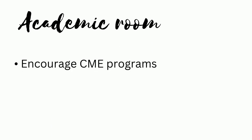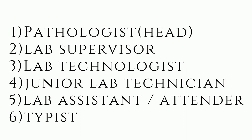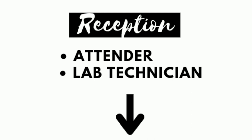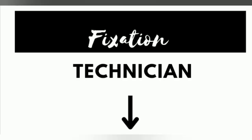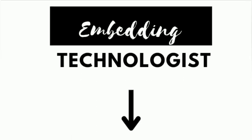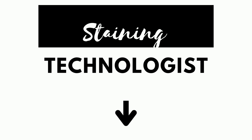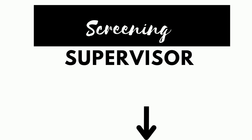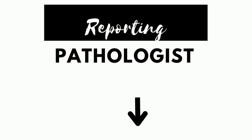Laboratory personnel include a pathologist, lab supervisor, lab technician, junior lab technician, lab assistant or attendant, and a typist. The lab attendant or technician receives the sample from the patient and fixes the tissue. The technologist performs embedding, sectioning, and staining. The supervisor screens and checks the quality of the slide, then the pathologist gives the report.